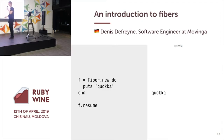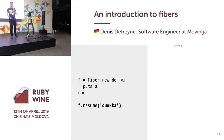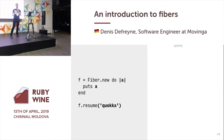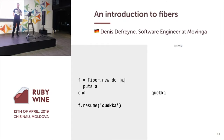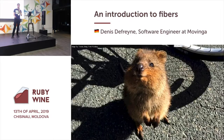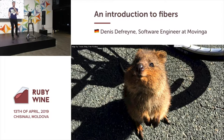Here I have a Fiber that prints 'Quokka'. So if I resume it, it prints 'Quokka'. Now I can call resume with a value — in this case the string 'Quokka' — in which case it will be passed in as a block argument to Fiber.yield. So if I let the Fiber print that block argument, then you will get 'Quokka' printed.